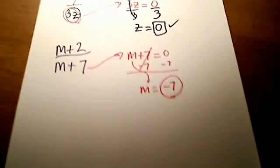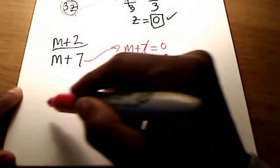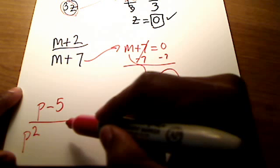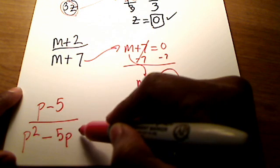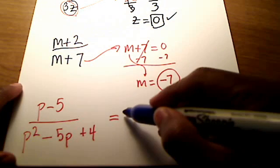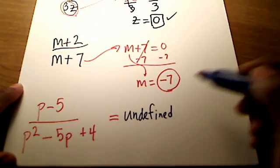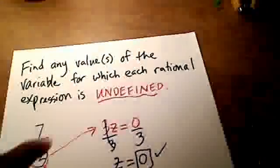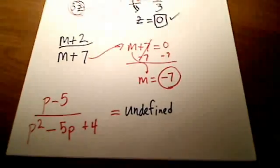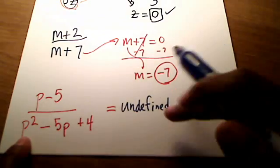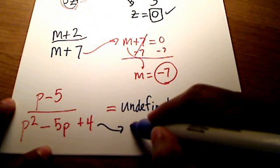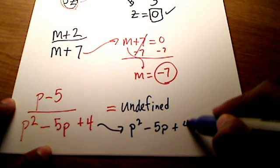Let me show you one more example. How about p minus 5 over p squared minus 5p plus 4? What would make this thing undefined? What value or values, because there could be more than one? This one had just a zero, this one had just negative 7, but in this last case, what value or values for p would make my whole expression undefined? Once again, let's start with taking our denominator and set it equal to zero.